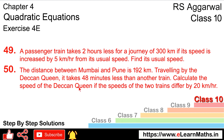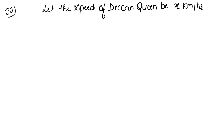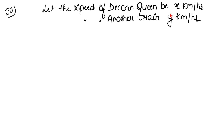We need to find the Deccan Queen's speed. Let the speed of the Deccan Queen be x km per hour. The speed of the other train will be y km per hour. The problem states that the two trains' speeds differ by 20 km per hour, giving us one equation: x minus y equals 20.